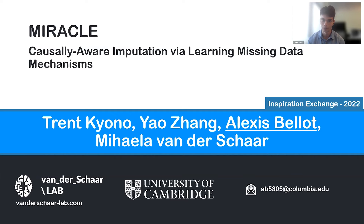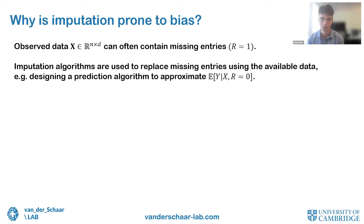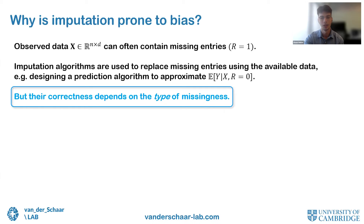I'll develop an algorithm using causal insights to do better imputation — this is joint work with Trent and Yau, also former PhD students of Mihaela. To explain why imputation is prone to bias: for each observed variable we include an additional variable R indicating whether a specific entry is missing (R=1) or not (R=0). A common strategy takes all available data and learns a prediction function for missing data — implicitly always conditioning on R=0. The correctness of this imputation strategy depends on the type of missingness.